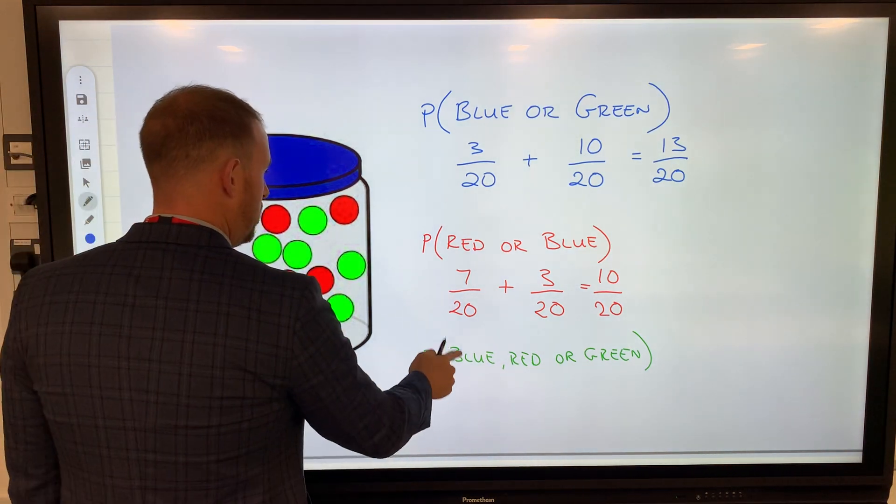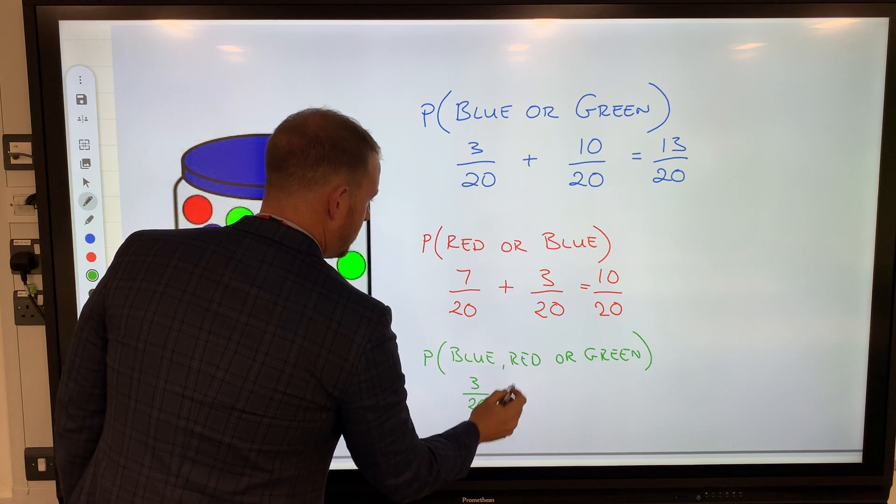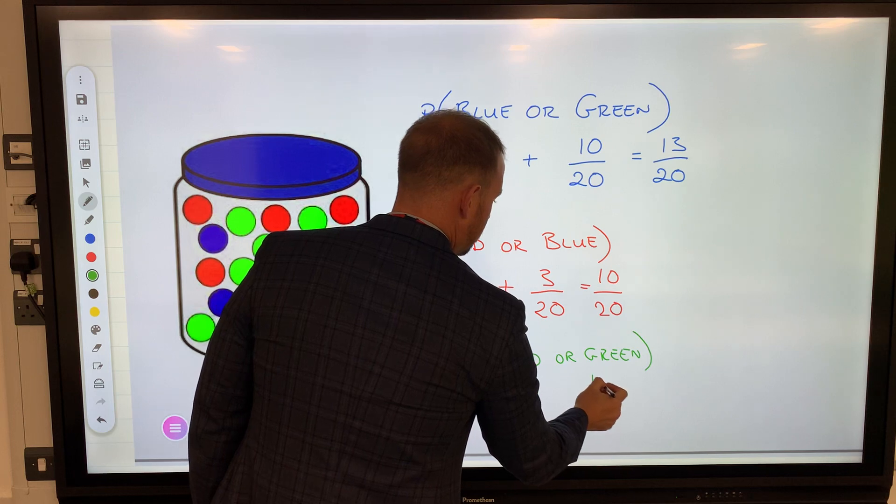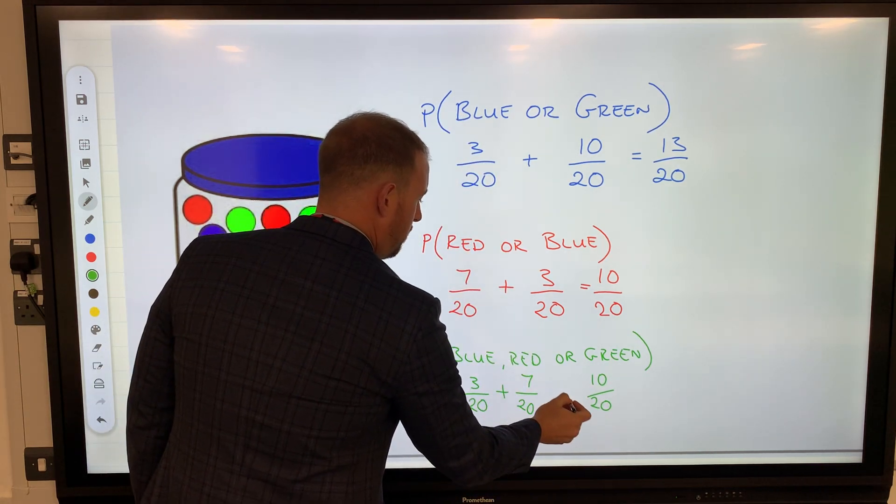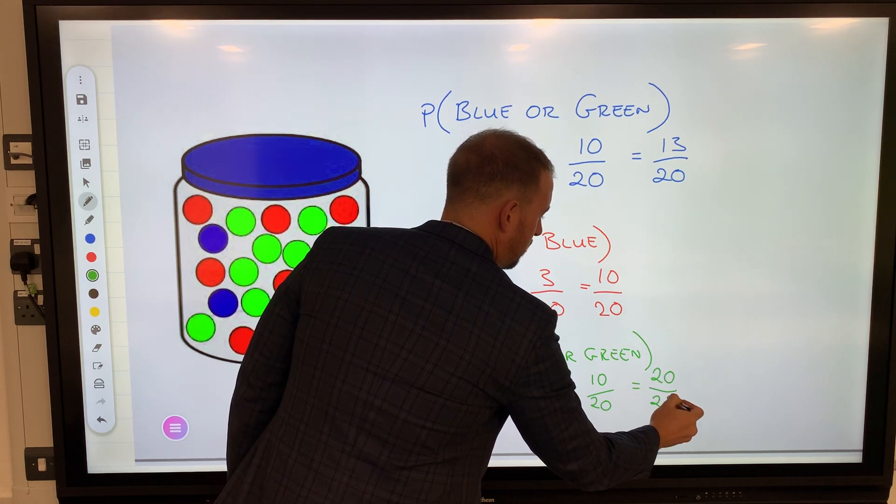Probability of blue was 3/20, probability of red was 7/20, probability of green was 10/20. Add them all up, we have 20/20, which equals one. Remember, one is certain.